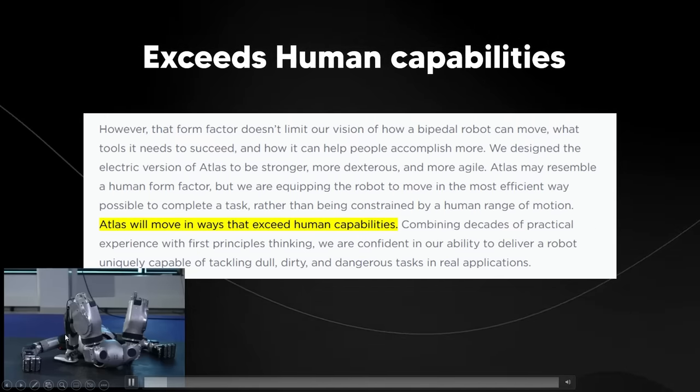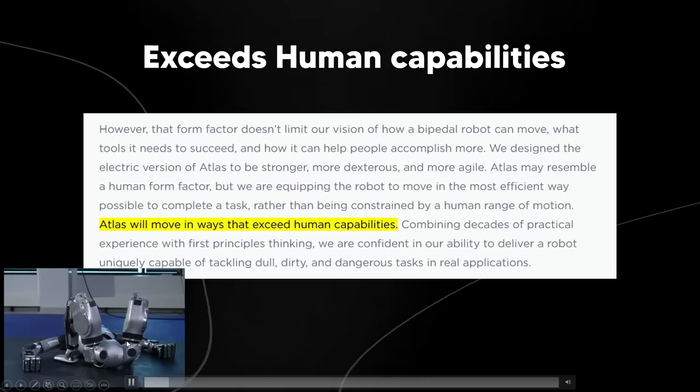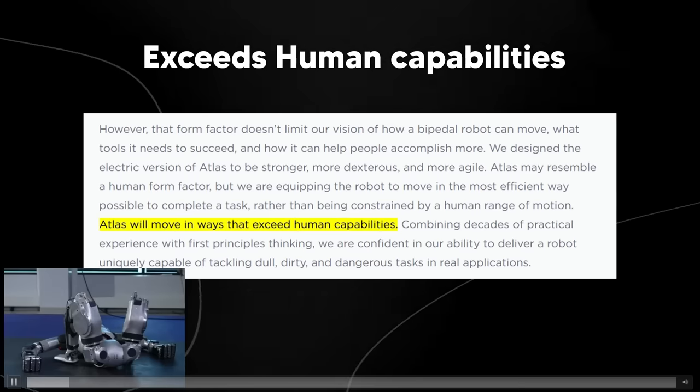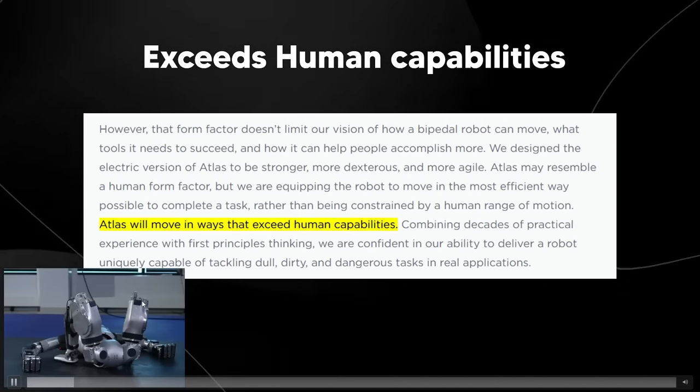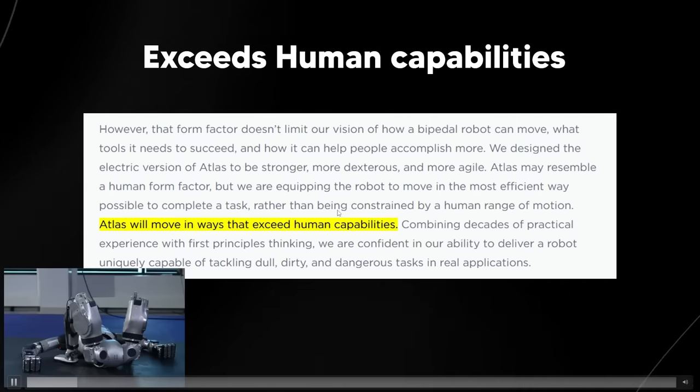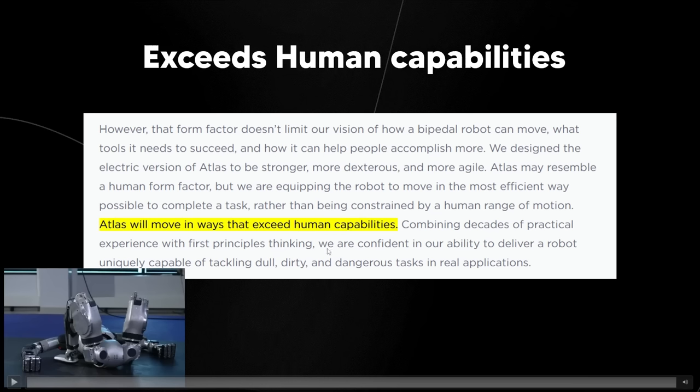That's why I have the picture of the robot here in the bottom left hand corner, because we all saw exactly how that robot stood up. It was probably the most uncanny thing I've ever seen, a robot being able to swivel on its hips and just standing up like something out of a horror movie. Definitely interesting, and I'm wondering how it's going to complete certain tasks when it's able to move and swivel its hips in a way that humans simply can't. Atlas will move in ways that exceed human capabilities. We are confident in our ability to deliver a robot uniquely capable of tackling dull, dirty, and dangerous tasks in real applications.